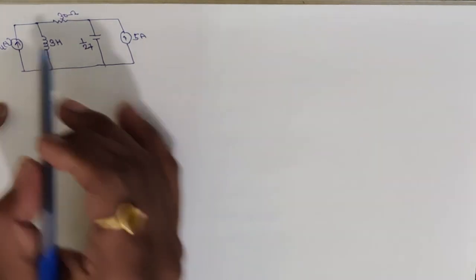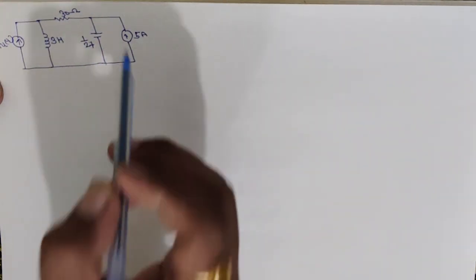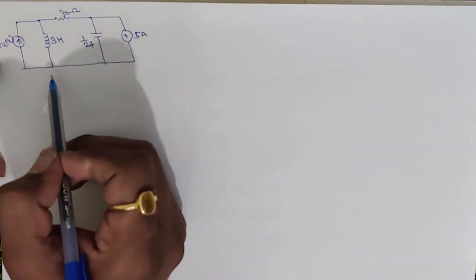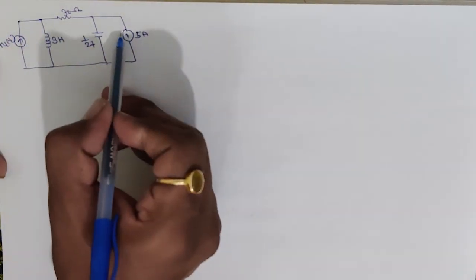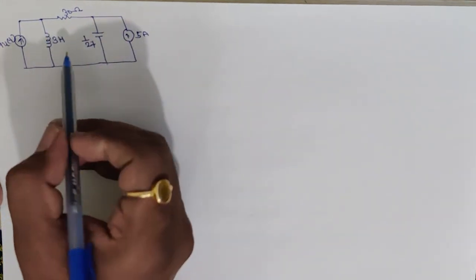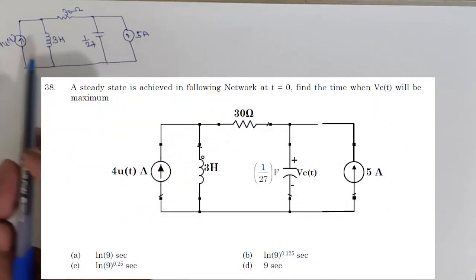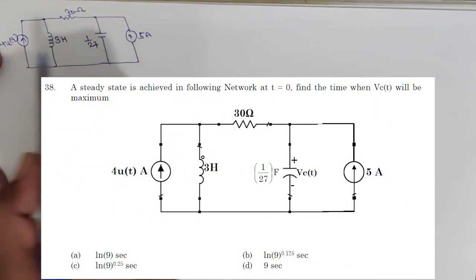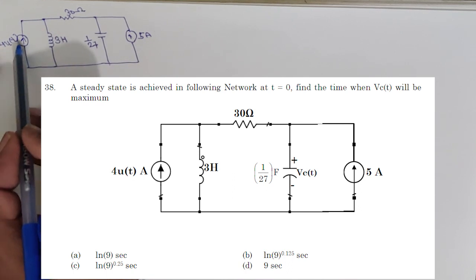Hello friends, welcome to the GATE gun. Today we are going to solve the ISO series question. This is question number 38 from the 2018 paper. In this question we have given two current sources: the first is the AC current source and the second is the DC current source.